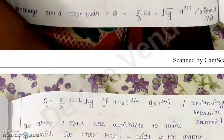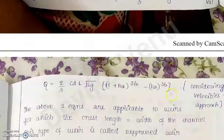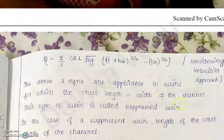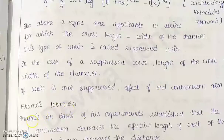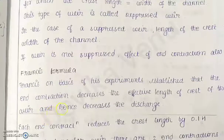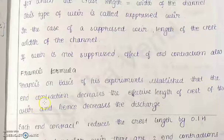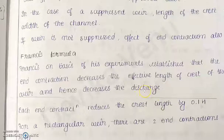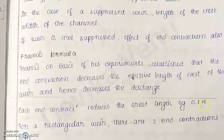Now we will incorporate the N contraction term. When applying the standard equation, we assume the crest length of the weir is the same as the width of the channel. However, Francis found through experiments that due to the ends of the weir, N contraction occurs — the presence of sides decreases the discharge. His experiments helped quantify this effect.